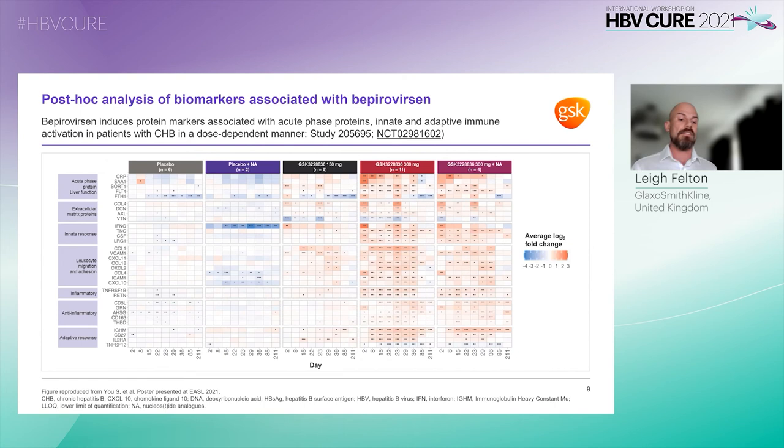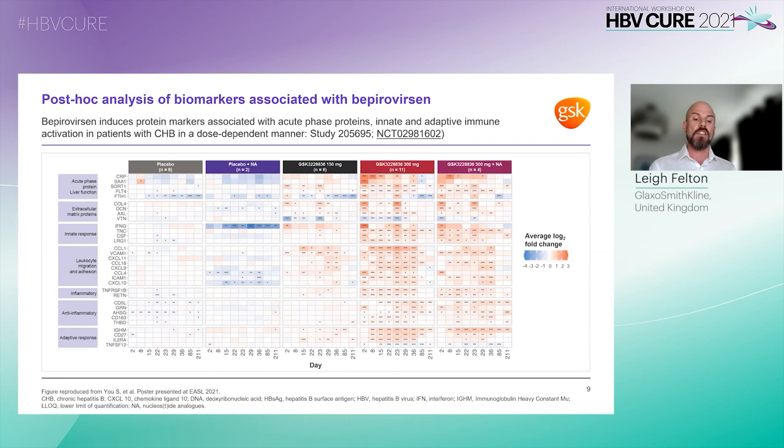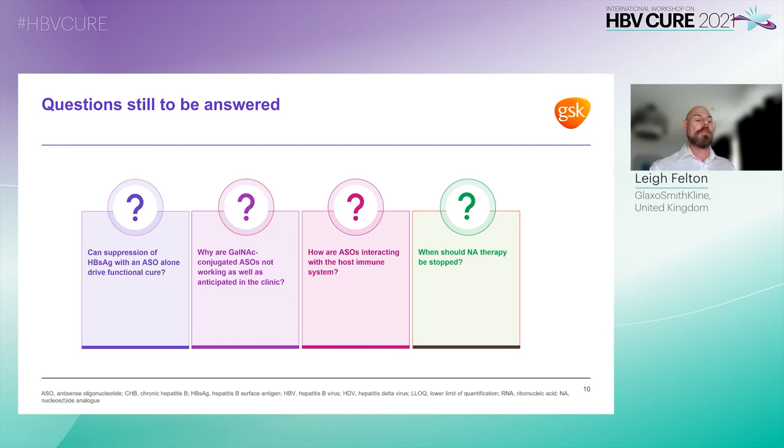Biomarkers indicative of macrophage activation and recruitment and activation of T and B cells were elevated in most patients with S antigen reduction, while these responses were dampened in non-responders. GSK concluded that these observations support the hypothesis that ALT elevations following suppression of S antigen are driven by HBV-targeted immune responses.